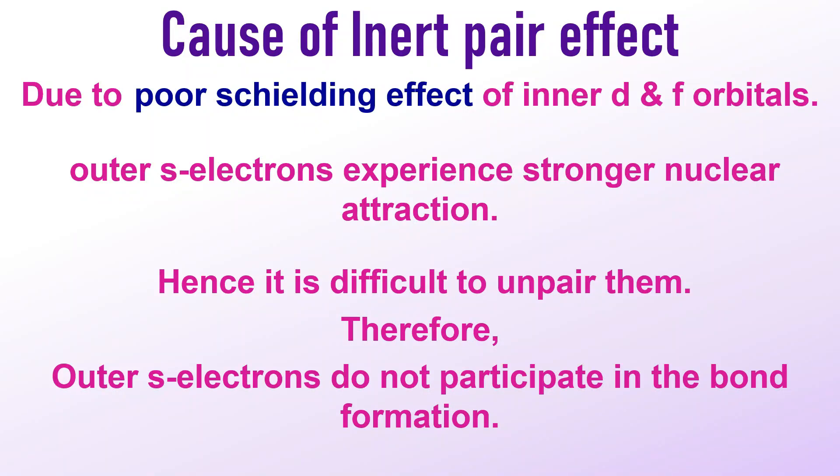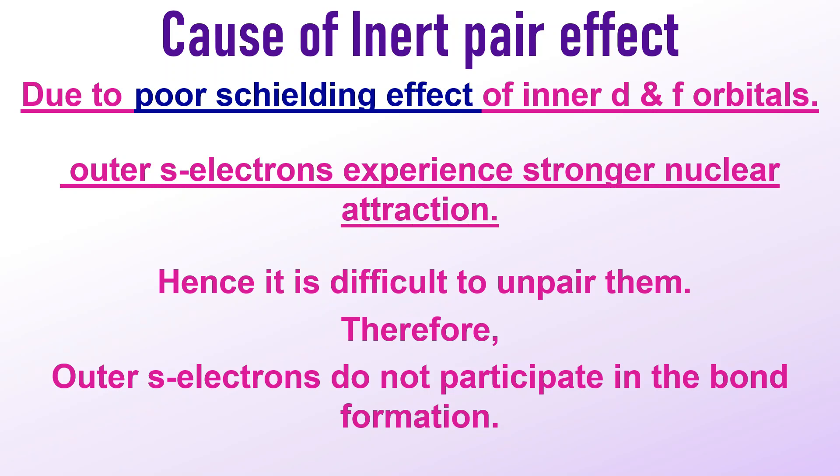The question now is why the two electrons in the s orbital of the valence shell remain inert and are reluctant to take part in bond formation. This is due to the poor shielding effect of inner d and f orbitals, which causes the outer s electrons to experience a stronger attraction from the nucleus. As a result, these electrons are difficult to unpair and therefore do not engage in bond formation.